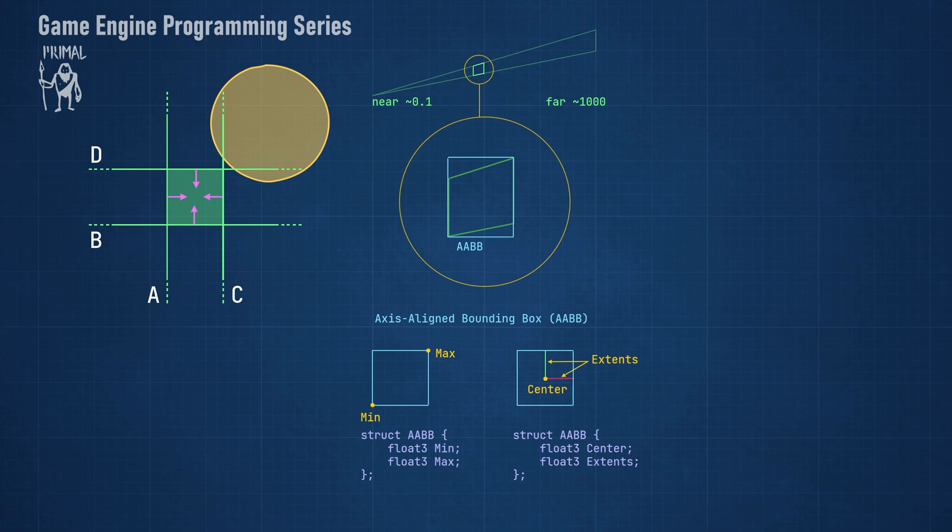This is called an axis-aligned bounding box, which can be defined by two points. These points can be two vertices of the box with a minimum and maximum position with respect to the origin. We can also define this box using its center point and the distance of this point to the walls in each direction.